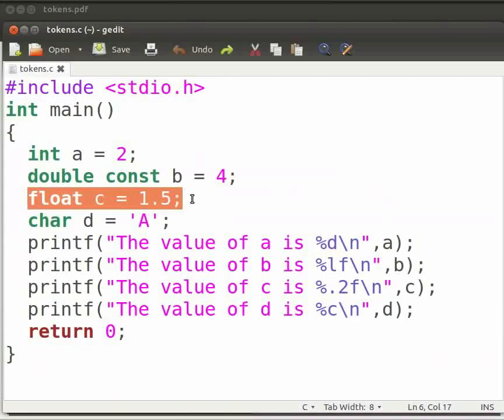Here, float is a data type of variable c. We have assigned it a value of 1.5. Data type is a finite set of values along with a set of rules.